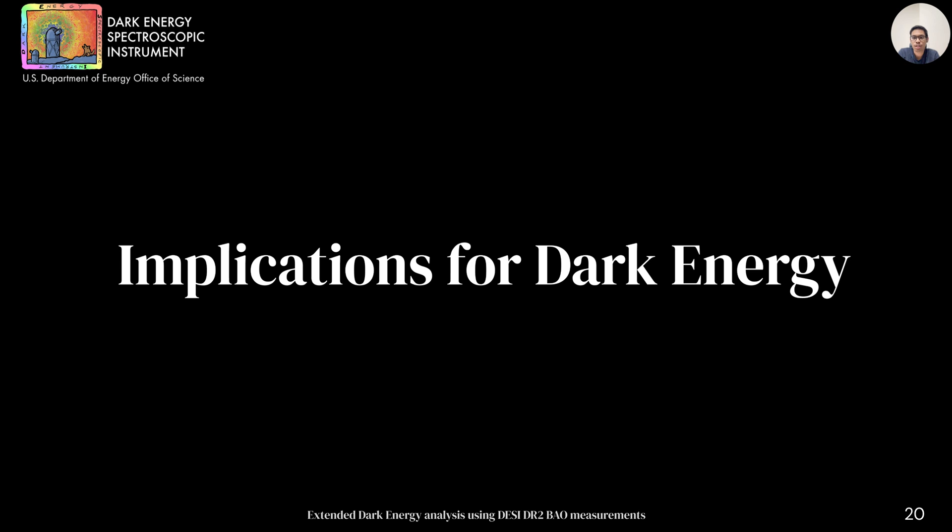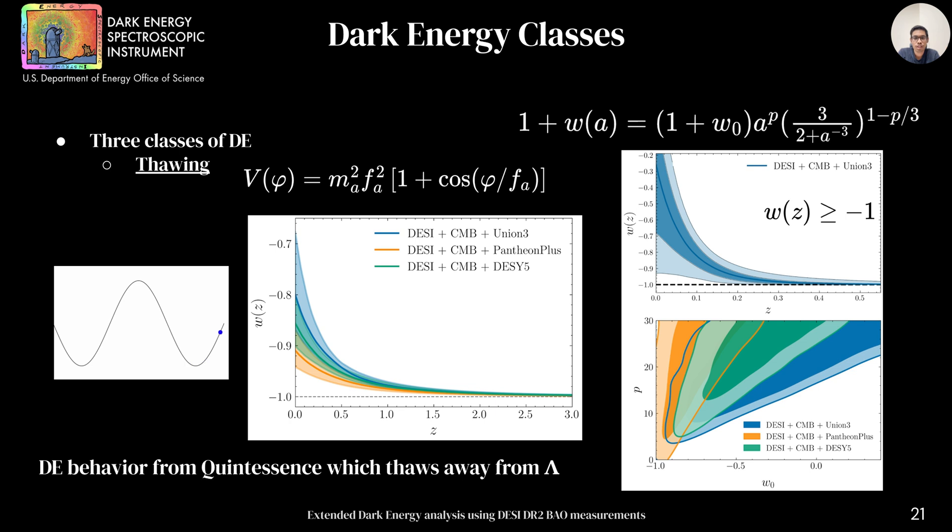Now that we have tested robustness of these trends, what does it mean for dark energy? To answer this question, we consider three dark energy classes. The first class is called thawing. It captures a subclass of quintessence model where a field is initially frozen due to Hubble friction, but as the universe expands, this field slowly thaws away from constant. This kind of behavior can be captured by the equation described on the top right. As an illustrative example, we show how axion field dynamics can be translated into w of z, which you can see can be easily captured by our parameterization. Please note this parameterization does not have a phantom crossing and imposes a monotonic behavior. On the top right, we are showing w of z constraint from DAISI plus CMB plus Union 3, and in the bottom plot the parameter constraints from three different supernova combinations.